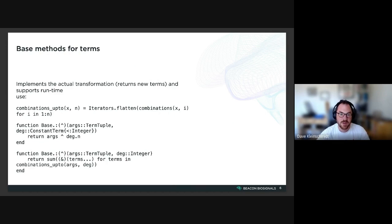So the base methods for terms for this incomplete cross or exponentiation operator looks like this. We define a helper function combinations_up_to which basically just takes all the combinations up to and including the n-way combinations of n terms.